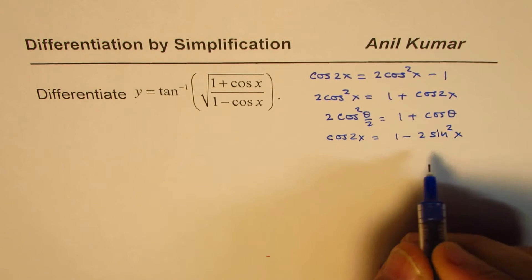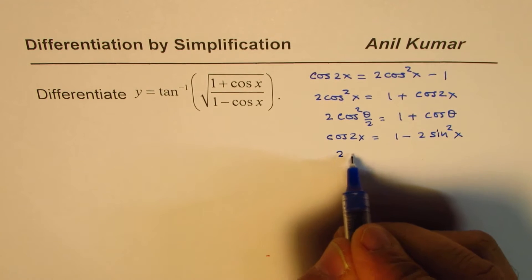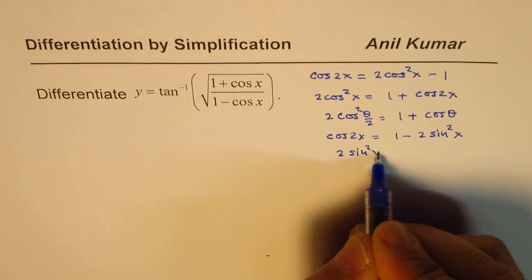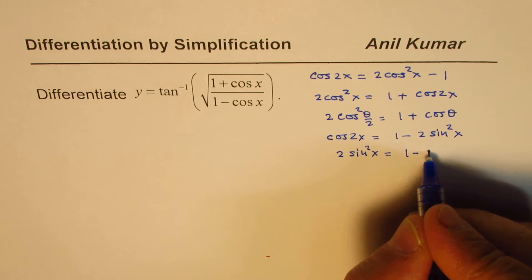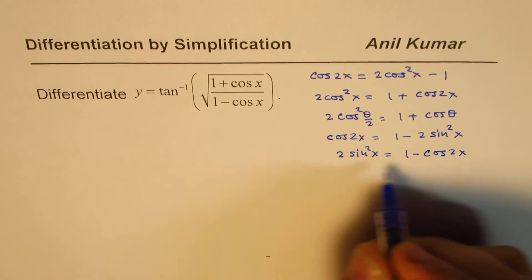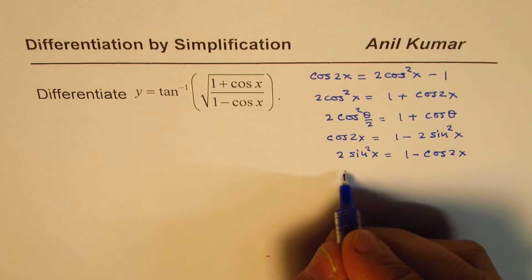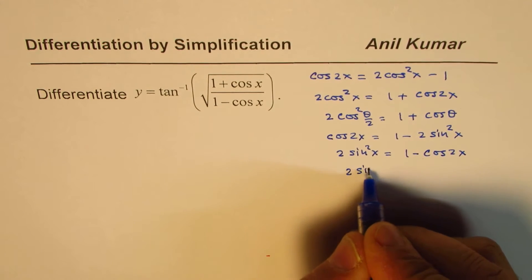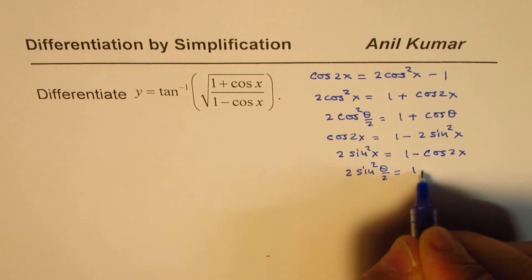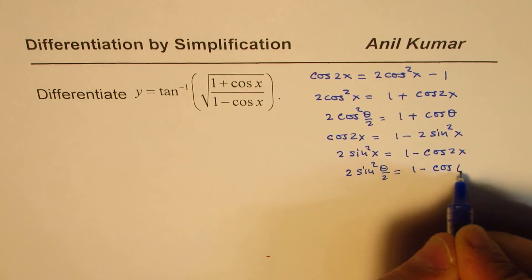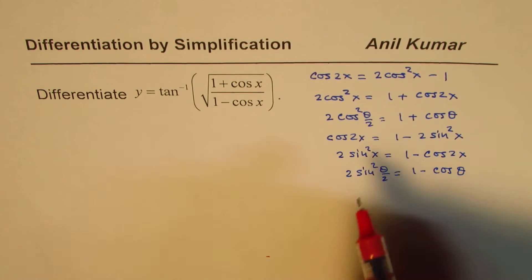Rearranging, we write 2sin²x equals 1 minus cos 2x, and replacing x by θ/2 we get 2sin²(θ/2) equals 1 minus cos θ.